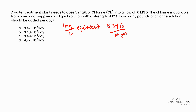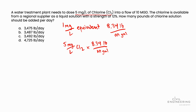Taking this knowledge, we then need to apply it to the problem. We're given 5 milligrams per liter of chlorine, so we take our 5 milligrams per liter of chlorine and multiply it by 8.34 pounds per million gallons — that conversion factor we just talked about. Then we multiply this by our flow. In the problem statement, we're given a flow rate of 10 million gallons per day, so we'll call that 10 MGAL per day.